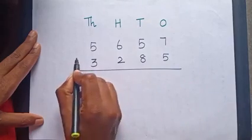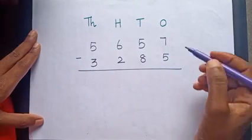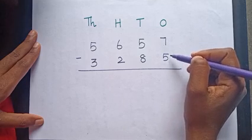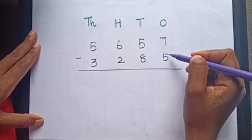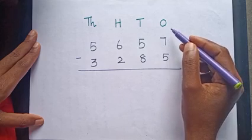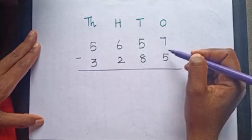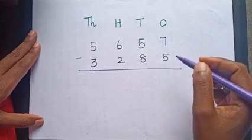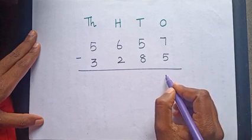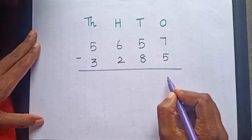Let's subtract. 7 minus 5 is equal to? Tell me. Yes, very good, 2.